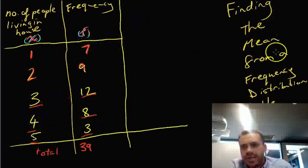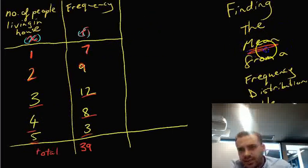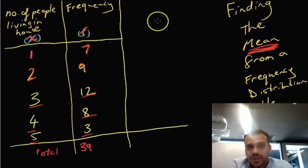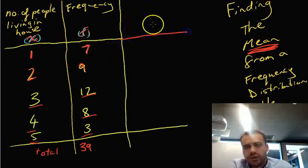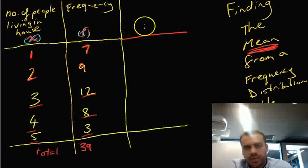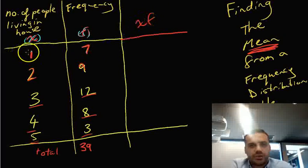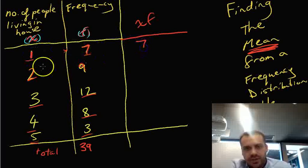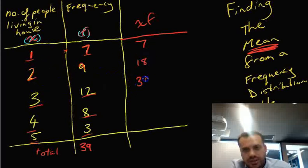Now in order for us to find the mean, that's what we're here to do. We're finding the average number of people in a house for this particular question. We need to create a third column in our frequency distribution table called XF. Now the XF column is really simple. You just multiply this number by this number. So one times seven is seven. Two times nine is 18. Three times 12 is 36. Four times eight is 32. And five times three is 15.